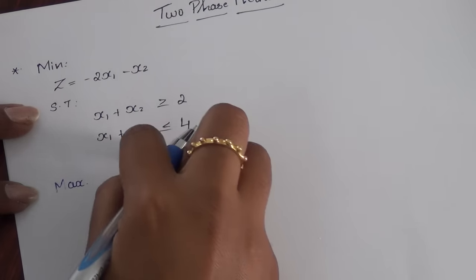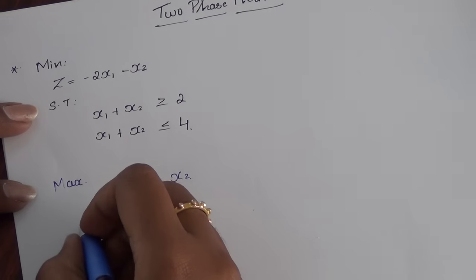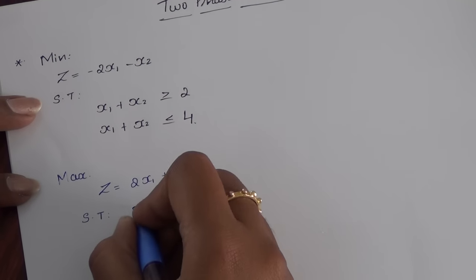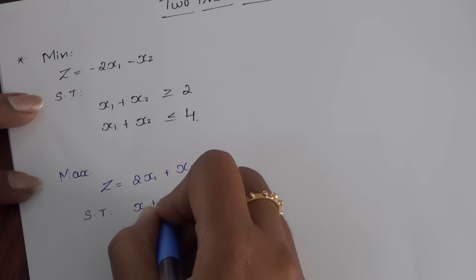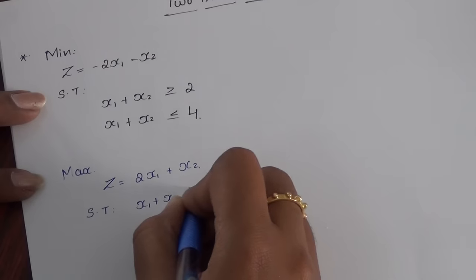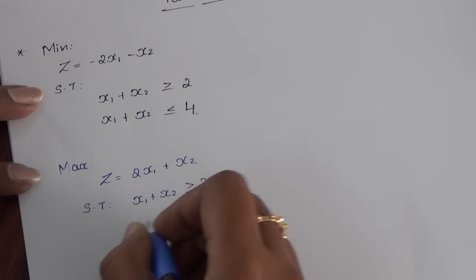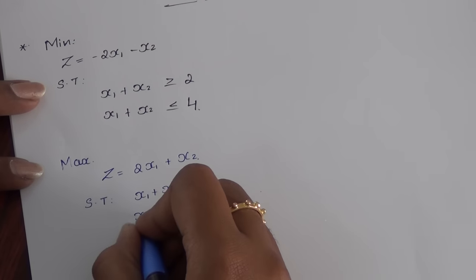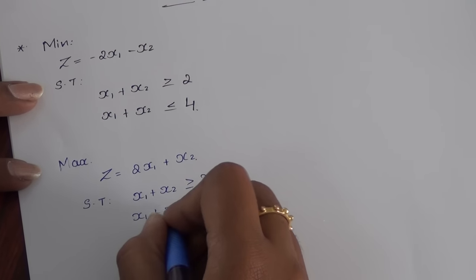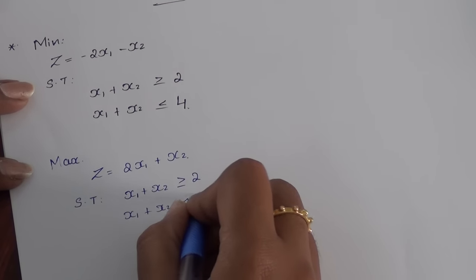The constraints will remain the same: x1 plus x2 is greater than or equal to 2, and x1 plus x2 is less than or equal to 4.